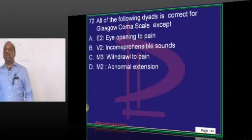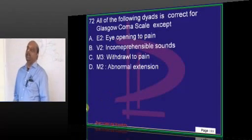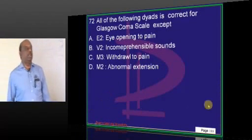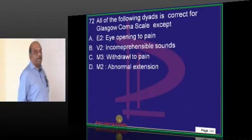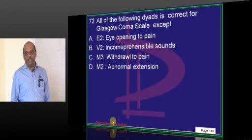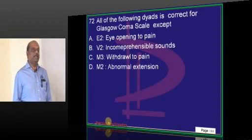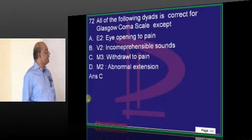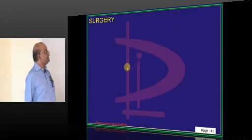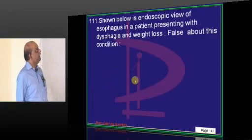For the Glasgow Coma Scale, you need to be quite sure of what E1, E2, E3, M2, M3, etc. represent — review the literature for these.